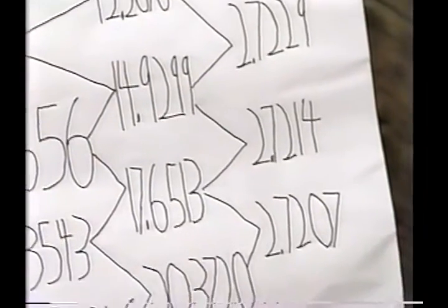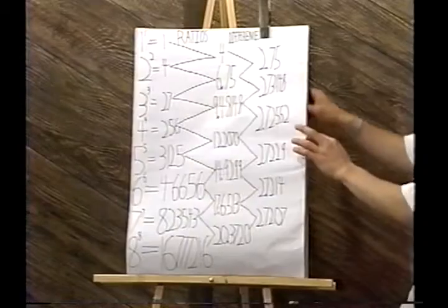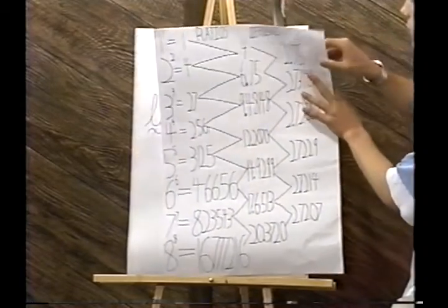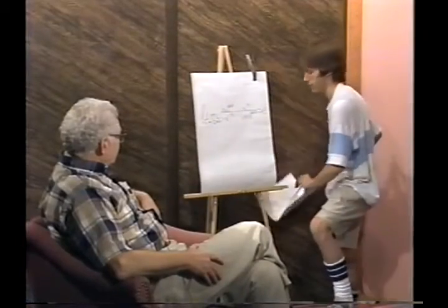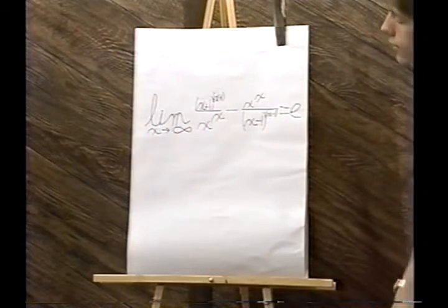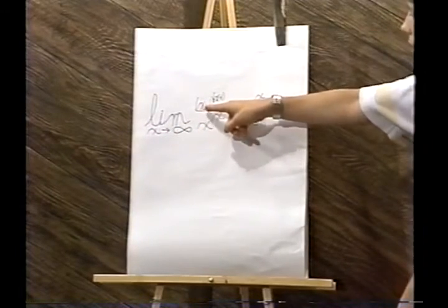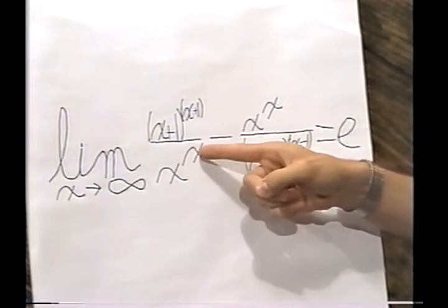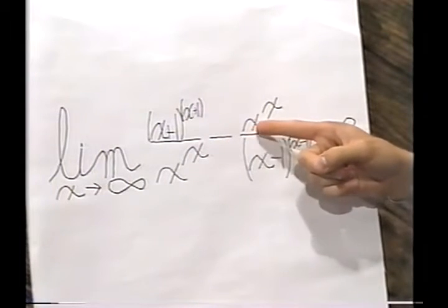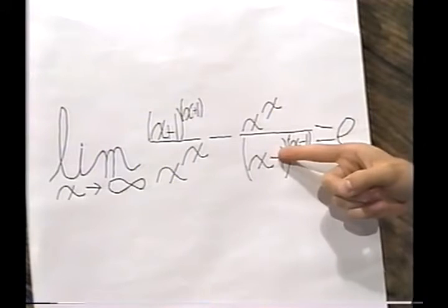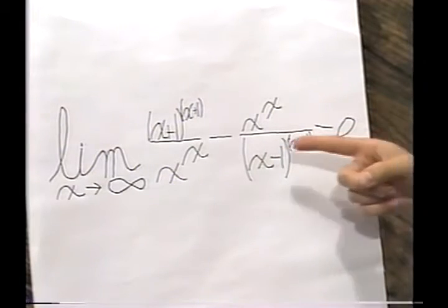And I sort of developed a hypothesis, which was that if you continued this series, you would eventually approach a limit of E. And that's what I've written out here, in a rather condensed form. It's if you take (x+1)^(x+1) over x^x, and subtract from that the ratio of x^x divided by (x-1)^(x-1). The limit of that, as x approaches infinity, is E.